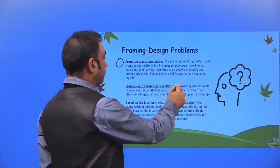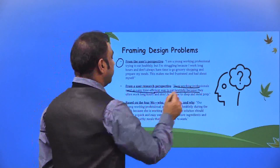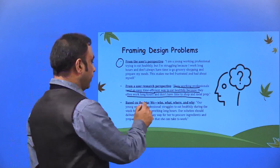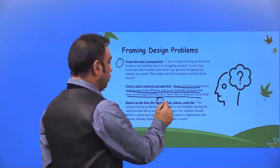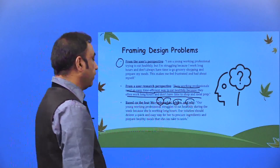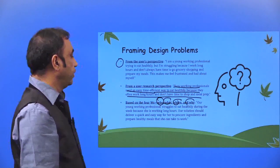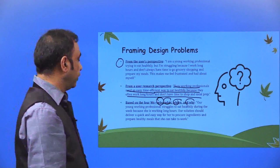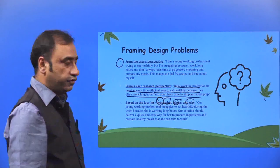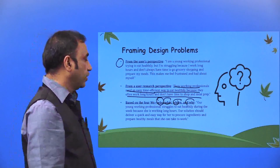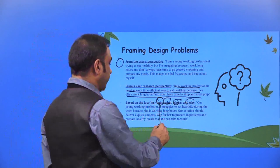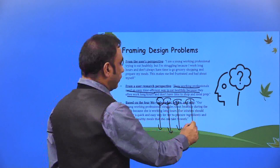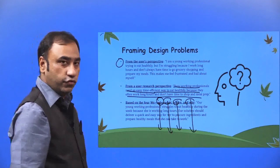From a user research perspective: busy working professionals need an easy, time-efficient way to eat healthy food because they often work long hours and don't have time to shop or do meal preparation. Based on the four W's — who, what, where and why — our young working professional struggles to eat healthy food during the week because she works long hours. Our solution should deliver a quick and easy way for her to procure ingredients and prepare a healthy meal she can take to work.